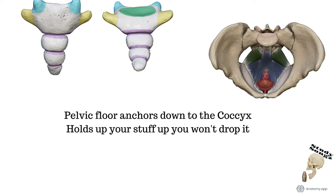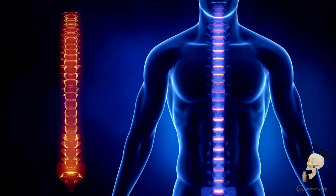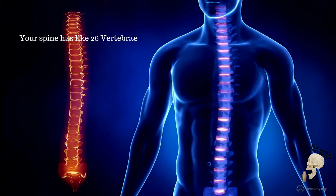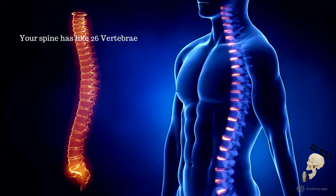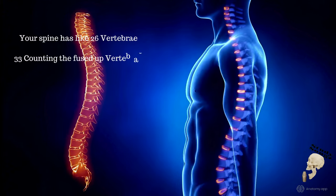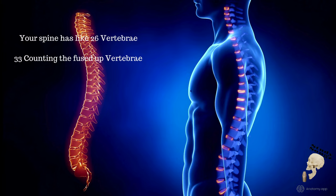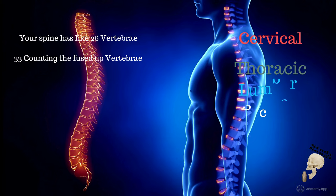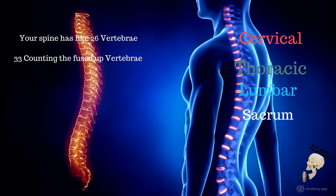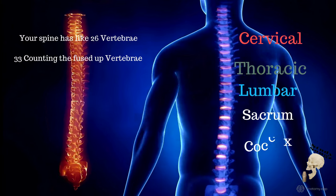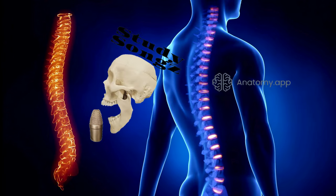Your spine has 26 vertebrae, 33 counting the fused vertebrae — cervical, thoracic, lumbar, sacrum. Don't forget the coccyx, that is the tailbone. Study songs.